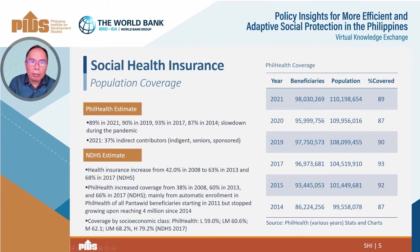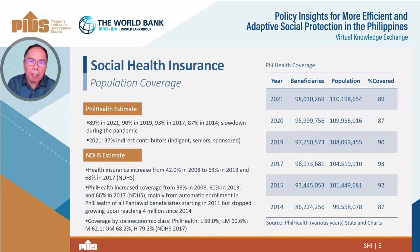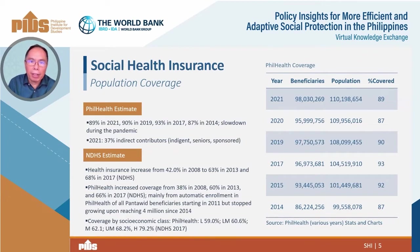Starting with social health insurance, we usually analyze performance of social insurance in three dimensions. One is population coverage — how many individuals are covered. Two is service coverage — how much of the health services are covered. And finally, financial coverage — how much of the health expenditures are covered.